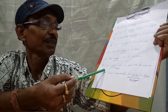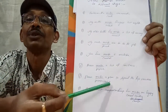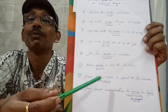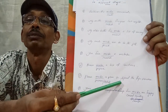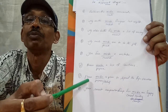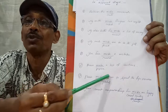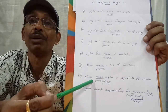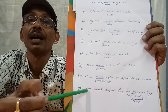Seventh example: 'Please make a plan to spend the puja vacation.' This means please think of a plan or propose a plan for how you will spend the puja holidays. So here 'make' replaces 'think of' or 'propose.'